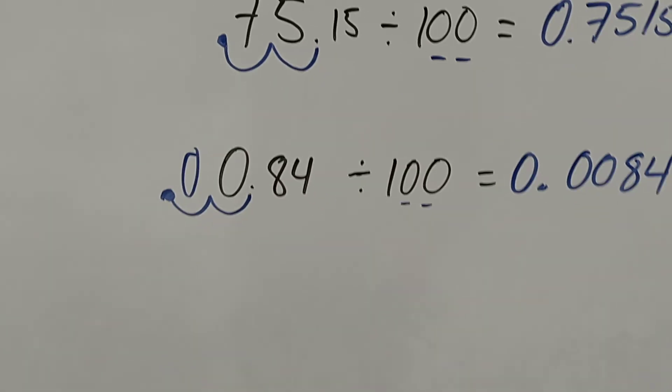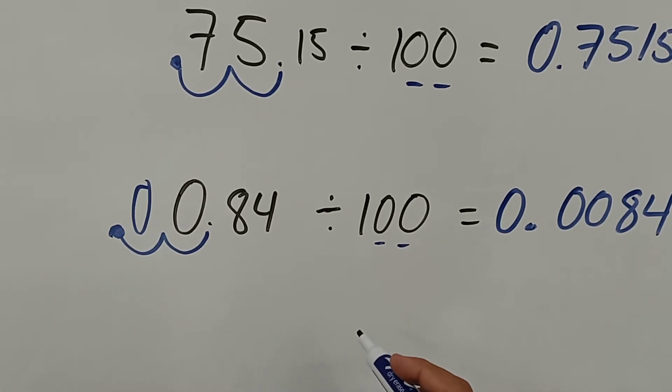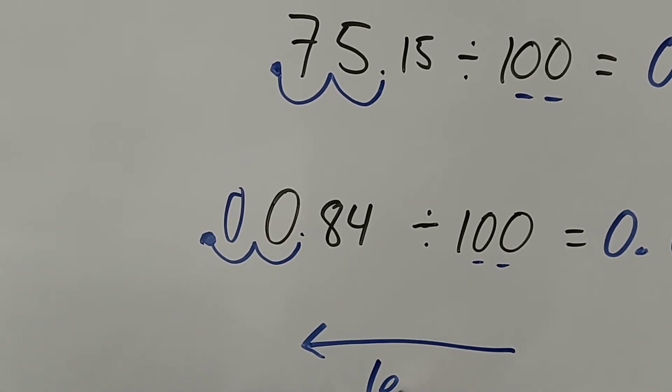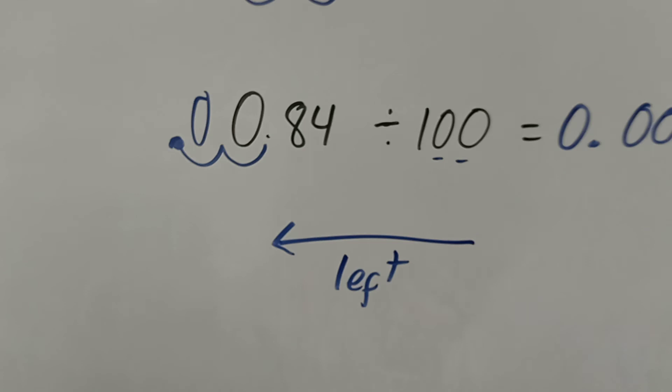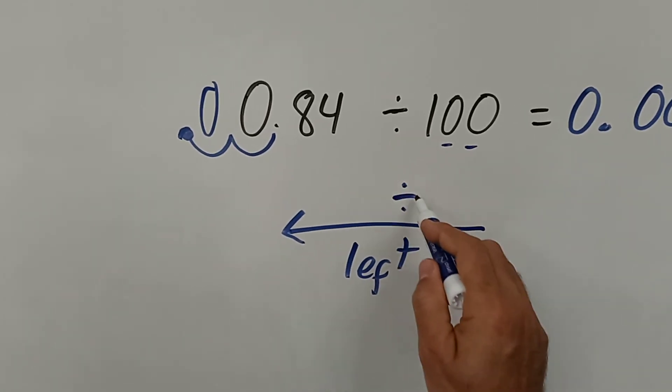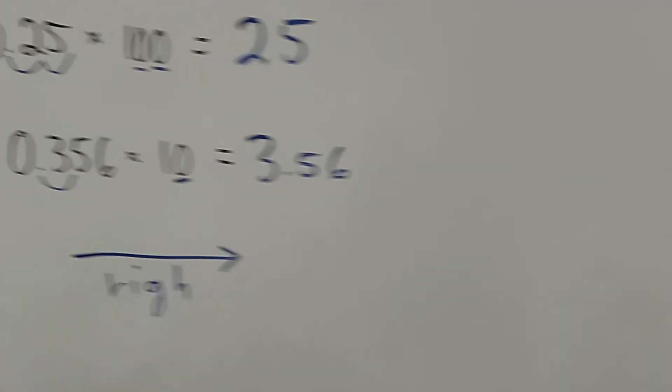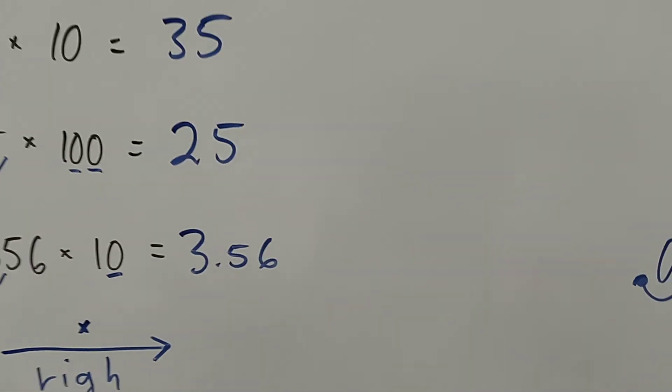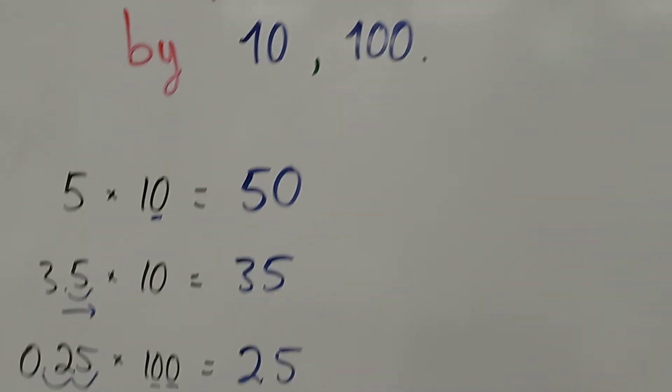That's it. Very simple. When you are multiplying, you go to the right. When you are dividing, you go to the left. As simple as that. Division, go to the left. Multiplication, goes to the right. That's it, thank you and share this video with your friends.